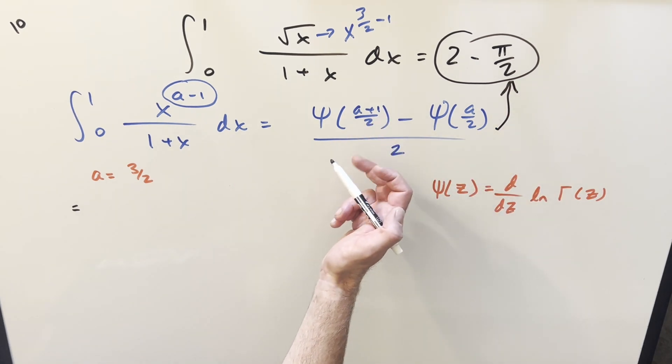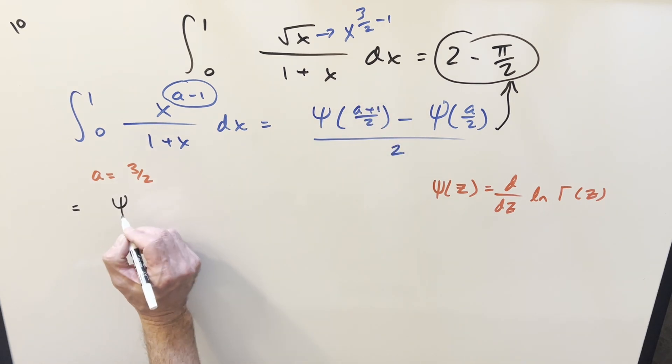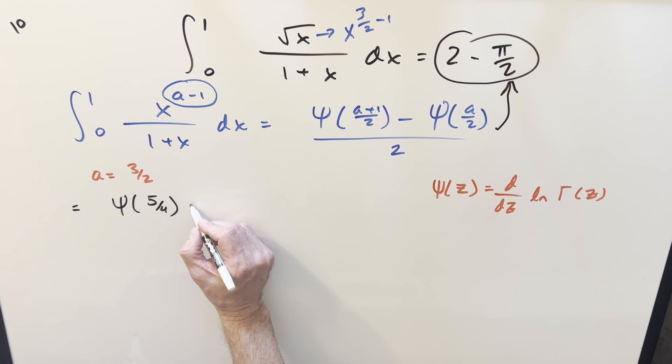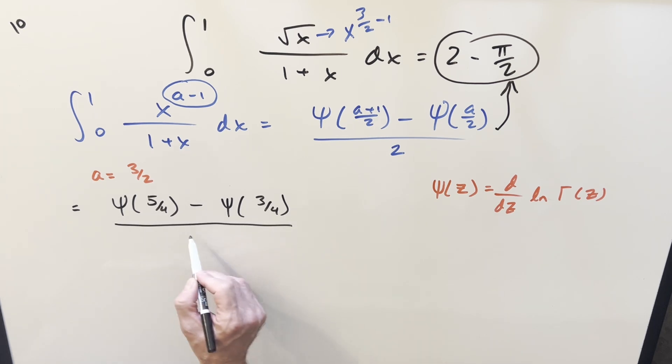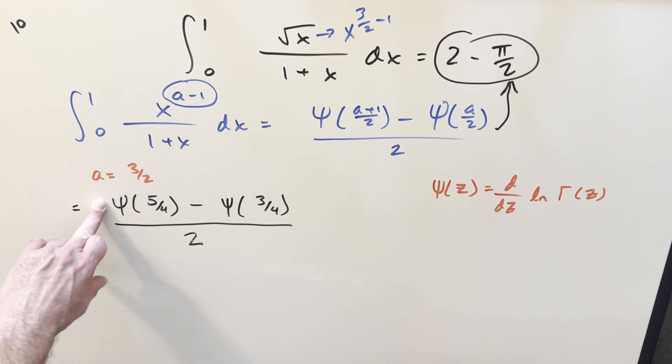So first, we plug in 3 halves here. When you do that, you get 5 halves over 2. This is going to become di-gamma of 5 over 4 minus the second part. You plug 3 halves in here. You just get di-gamma of 3 fourths. And this is all over 2. Now, what I want to do to simplify it further, let's focus on this first piece.